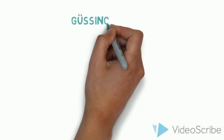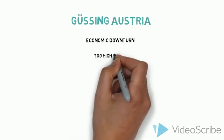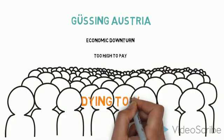Take, for example, the town of Gusing, Austria. In the midst of severe economic downturn and energy bills that were too high to pay, this small community of 4,000 was labeled by many as a dying town.